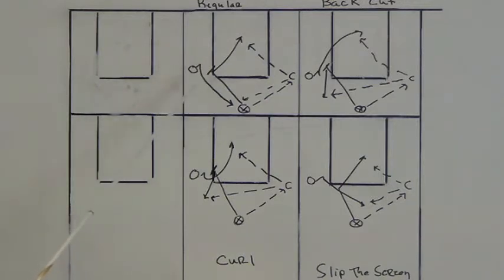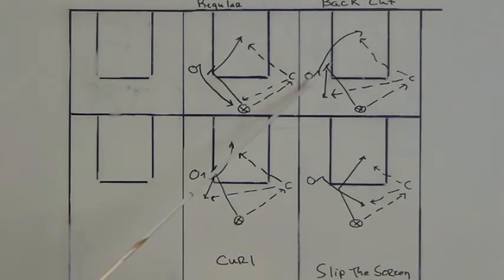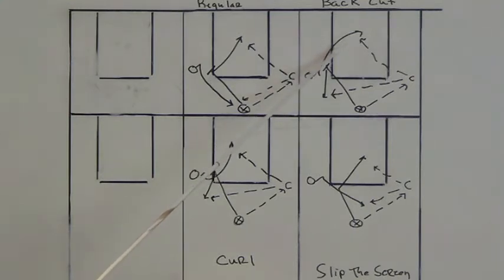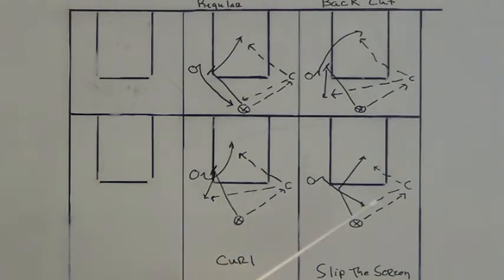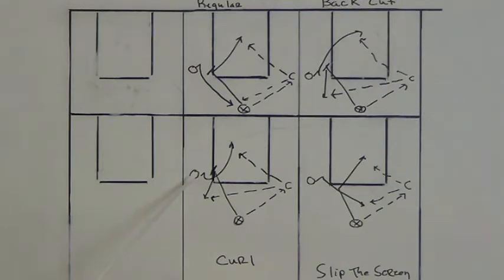The first and easiest cut is the regular cut off the screen — the only really difficult element on it is the roll. The second cut is the back cut: the screen is set, the man steps up if he wants to, then back cuts to the basket, and the screener pops straight out. The third cut is the curl — the cutter curls off the screen while the screener again pops. Teach your screeners to pop straight out, because in other screening situations that becomes much more important.